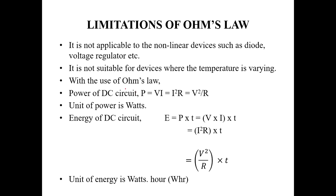Using Ohm's Law, we can calculate power: P equals V times I, or P equals I squared times R, or P equals V squared divided by R. The unit of power is watts. Energy is calculated as E equals power times time — that is, V times I times T, or I squared R times T, or V squared divided by R times T. The unit of energy is watt-hours.